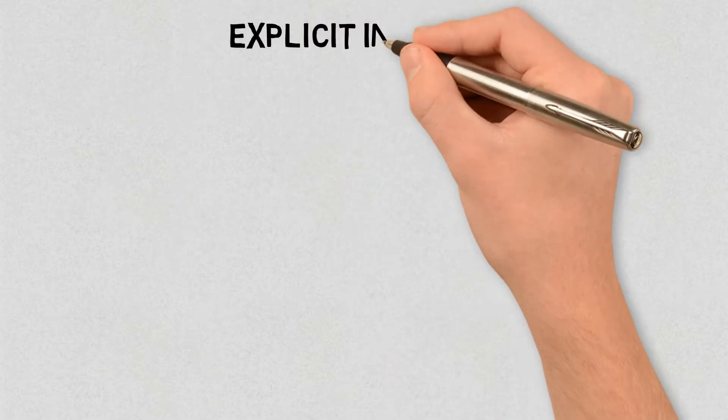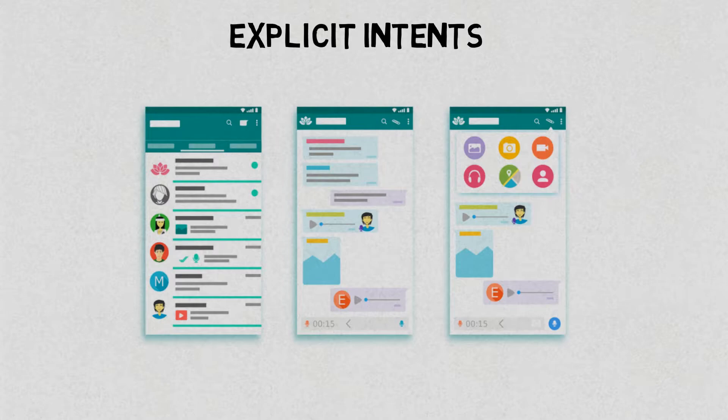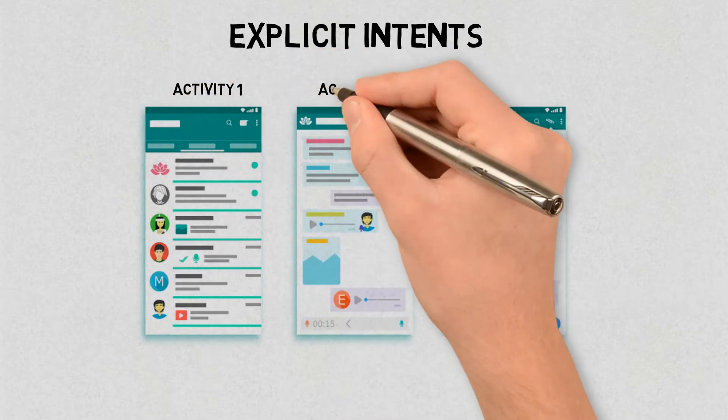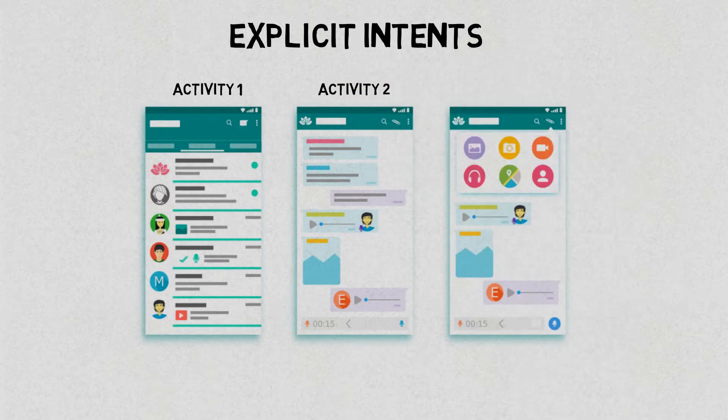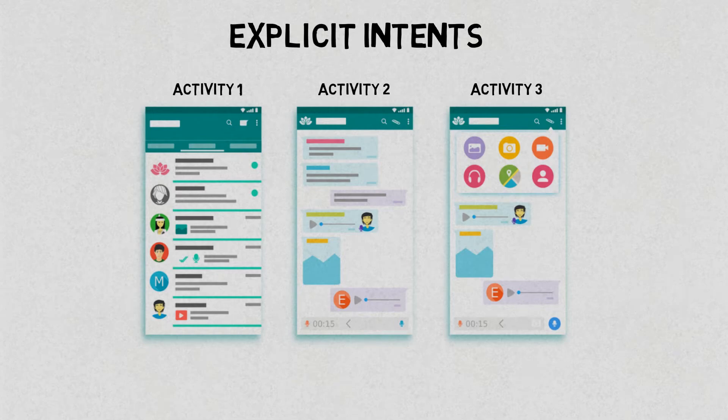Let's talk about them in more detail. Explicit intents specify which application will satisfy the intent by supplying either the target app's package name or a fully qualified component class name. You'll typically use an explicit intent to start a component in your own app because you know the class name of the activity or service you want to start.